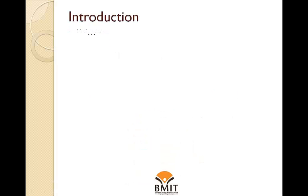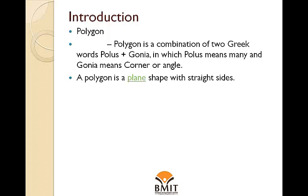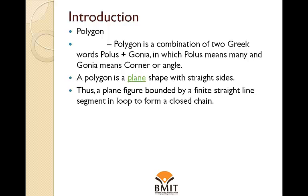Introduction to Polygons. The word polygon is a combination of two Greek words: polis plus gonia, in which polis means many and gonia means corner or angle. A polygon is a plane shape with straight sides — a plane figure bounded by a finite straight line segment in a loop to form a closed chain.